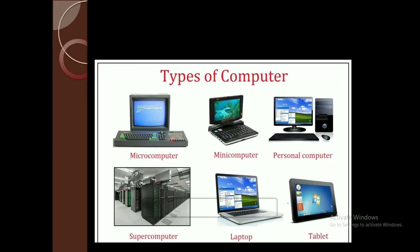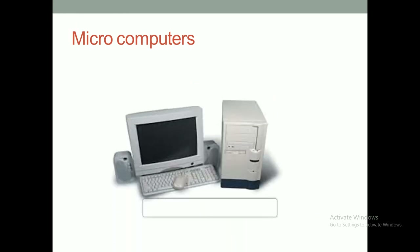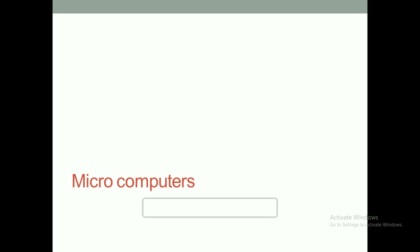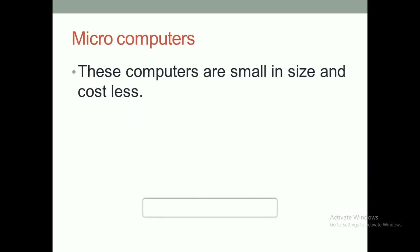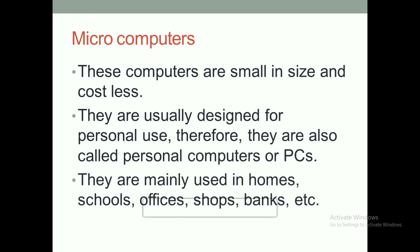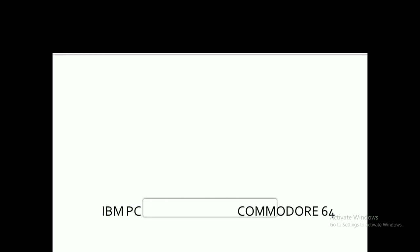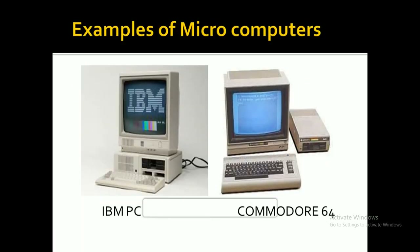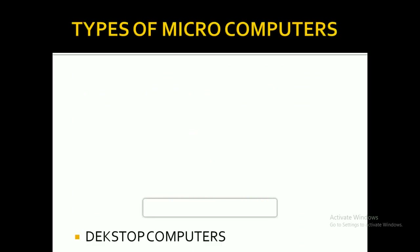Here are different types of computers such as microcomputers, mini computers, personal computers, super computers, laptops, and tablets. Microcomputers are small in size and cost less. They are usually designed for personal use, therefore they are also called personal computers or PCs. They are mainly used in homes, schools, offices, shops, banks, etc. Two examples of microcomputers are IBM PC and Commodore 64.